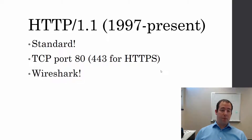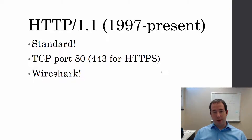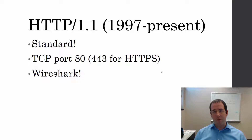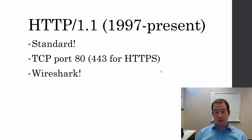HTTP, the Hypertext Transfer Protocol version 1.1, is the most common version of HTTP today. It was finalized in 1997 and is still the most common — about 94% of websites use HTTP 1.1. It uses TCP port 80, and port 443 if you use HTTPS to encrypt your content.